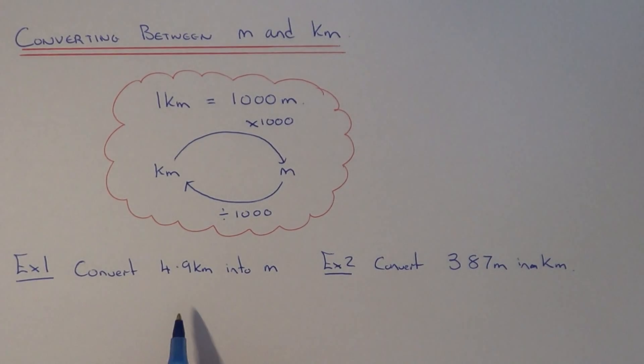Let's have a look at example one. We need to convert 4.9 kilometers into meters. Kilometers into meters, we need to multiply by a thousand. So we just need to do 4.9 times a thousand. This will give us 4,900 meters.